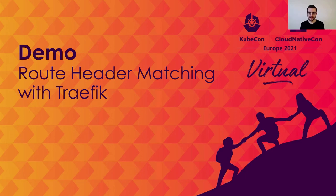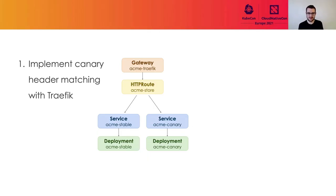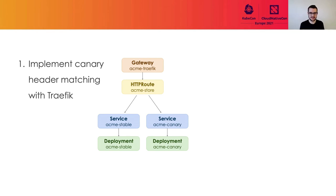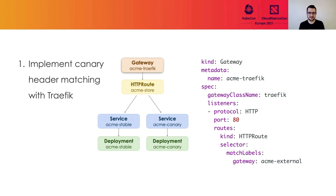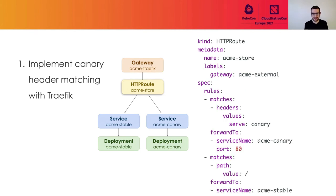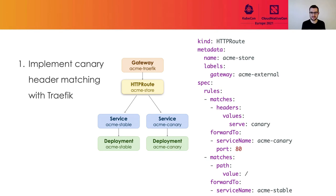In our third demo, we're going to use Traefik to show how route header matching works. We're going to do canary traffic splitting — but instead of percentage-based traffic splitting, we're going to do something a little bit differently. We're going to say any request that has a specific header should go to our canary service, and everything else should go to our stable service. Our gateway looks very similar, but for this demo we're using Traefik, so we create a new gateway using the Traefik gateway class. And we use an HTTP route that is just a little bit more complicated: the first rule says match any request that has header serve=canary and send it to our ACME canary service, and every other request by default should still go to the ACME stable service.